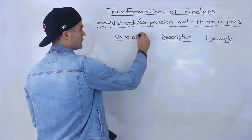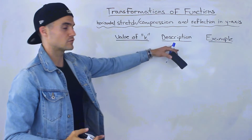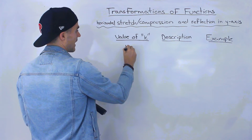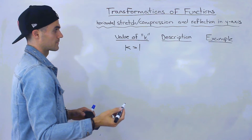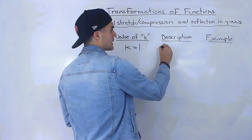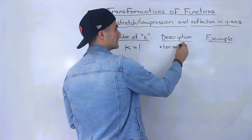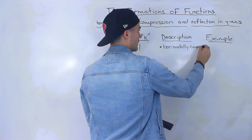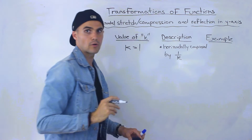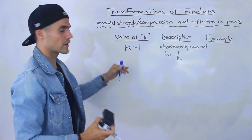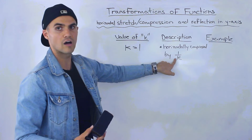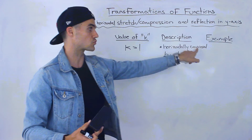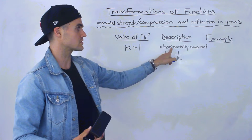We're going to go over a bunch of different cases for k, give a description depending on that value, and then show how it looks graphically. The first case is if k is greater than positive 1. If k is greater than 1, we say that the function is horizontally compressed by a factor of 1 over k. This is a bit different from the a value — you take the reciprocal. So when a was greater than 1 it was vertically stretched by a, but if k is greater than 1, it's horizontally compressed by 1 over k.